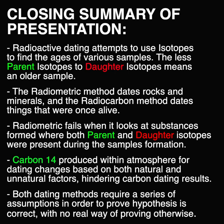As a closing summary of everything that we have learned throughout this presentation: radioactive dating attempts to use isotopes to find the ages of various samples. The less parent isotopes relative to daughter isotopes, the older the sample. The radiometric method dates rocks and minerals, and the radiocarbon method dates things that were once alive. Radiometric fails when both parent and daughter isotopes were present during the sample's formation. Carbon-14 produced within the atmosphere changes based on both natural and unnatural factors, hindering carbon dating results. Finally, both dating methods require a series of assumptions in order to prove a hypothesis correct, with no real way of proving otherwise.